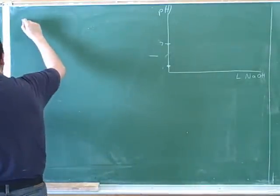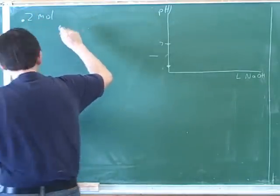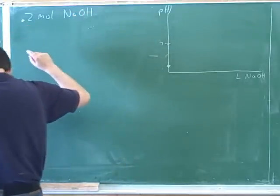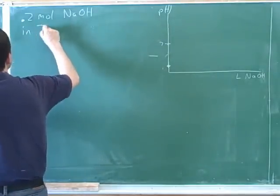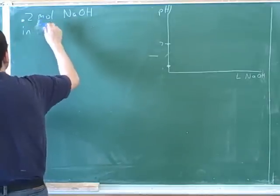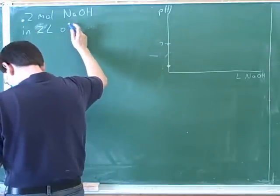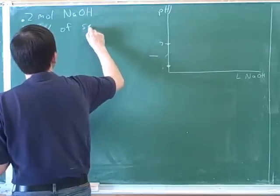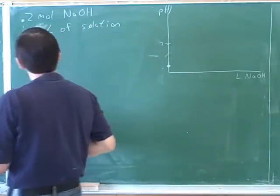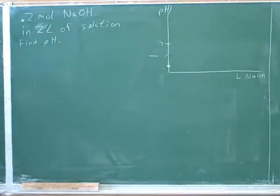All right, so let's say that we have 0.2 moles of sodium hydroxide in 2 liters of solution. Find the pH. Let's try this. And we want to try to do this systematically using the same kinds of techniques we used for the last two rounds.